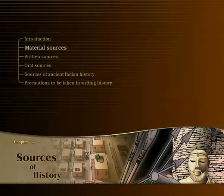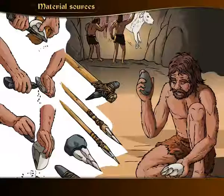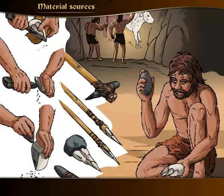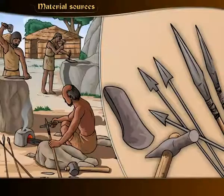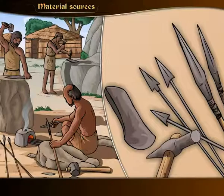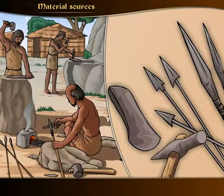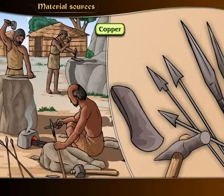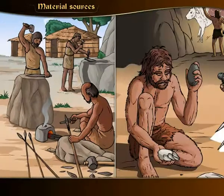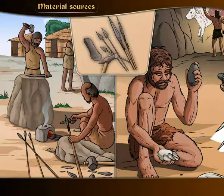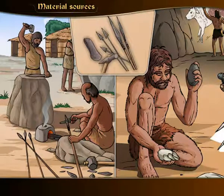Material Sources. The Stone Age man used stone tools and weapons. Later, he started making his weapons and tools or implements with metals like copper, bronze and iron. The improvements man achieved in his tools and weapons clearly tell us about the technological progress made by man.